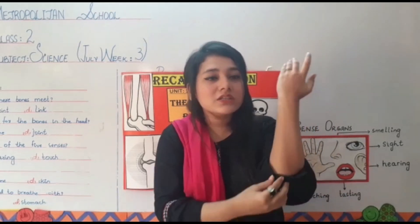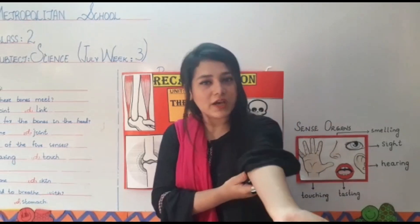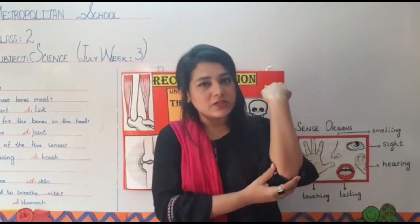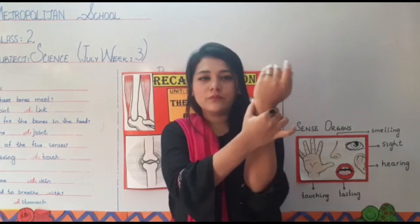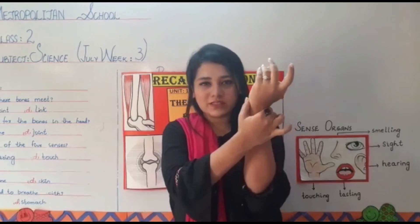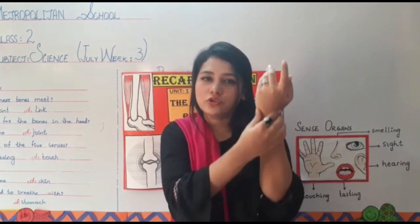As you can see, through this joint my hand is going forward and backward. Through this joint I can move my wrist. That's why these points are called joints.